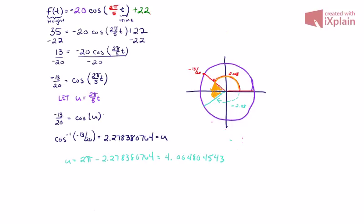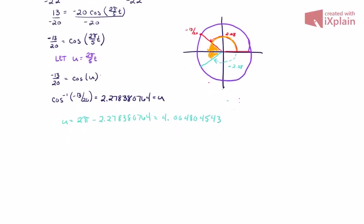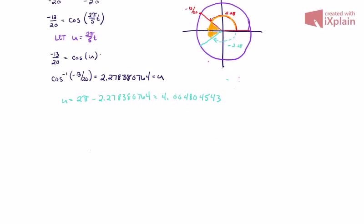So the next thing that we want to know is we have basically the two points where we are going to be 35 feet above the ground. So what we're going to go ahead and do is we're just going to continue working. I'm going to scroll this up a little bit. And I'm going to take my, I'm going to undo my substitution. So now I know that two pi fifths times t is equal to 2.278380764. And I also know that two pi over five times t is equal to 4.004804543.